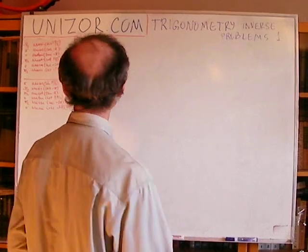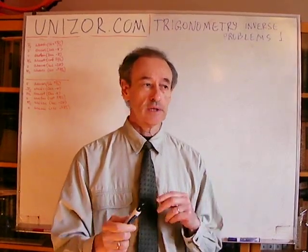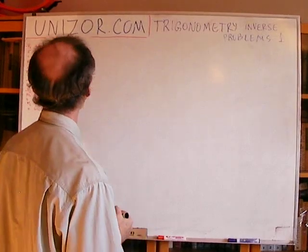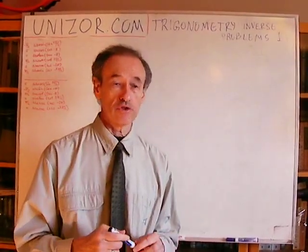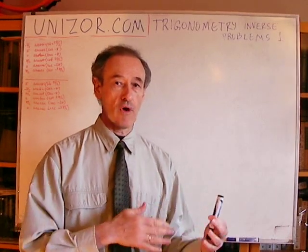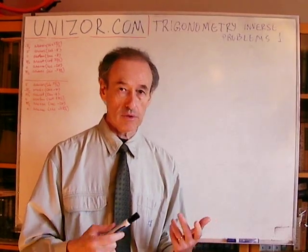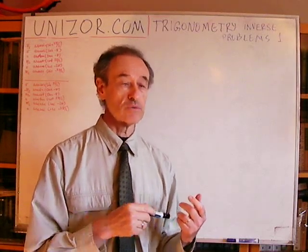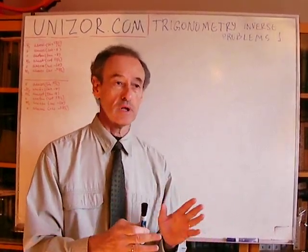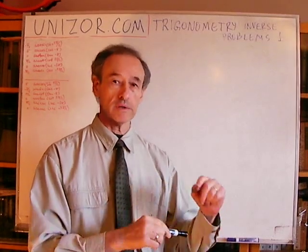Now, I have two lectures — one is a little bit simpler and related to just inverse functions, and another combines with some trigonometric functions. We have six different trigonometric functions and six different inverse trigonometric functions. The main problem is that regular trigonometric functions are periodical, and obviously they do not have an inverse everywhere. We have to restrict the domain of the main function to the area where it's monotonic, and in that area we can talk about inverse functions.